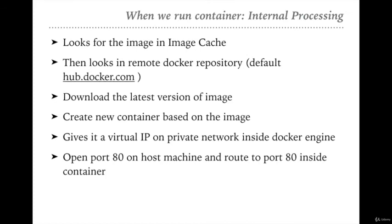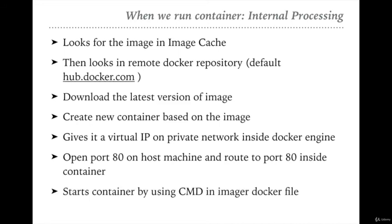Suppose we provided port 80 in the command — it will open port 80 on the host machine and route all traffic on port 80 inside the container. There are two ports which Docker uses to run the nginx image: internally it accepts traffic on port 80, and outside you can configure any port to route traffic to the local container port 80. After that, it will start the container with the help of the CMD command in the image's Dockerfile.